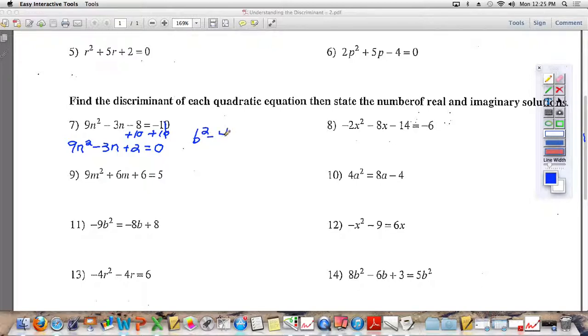The discriminant, remember, is b squared minus 4ac. In this case, the a value is 9. The b value is negative 3, and the c value is 2. So in this case, the b value is negative 3, so you need to make sure that you put your negative 3 in parentheses, square it, minus 4 times the a value, which is 9, times the c value, which is 2. And I believe when you do this, you end up with an answer of negative 63.